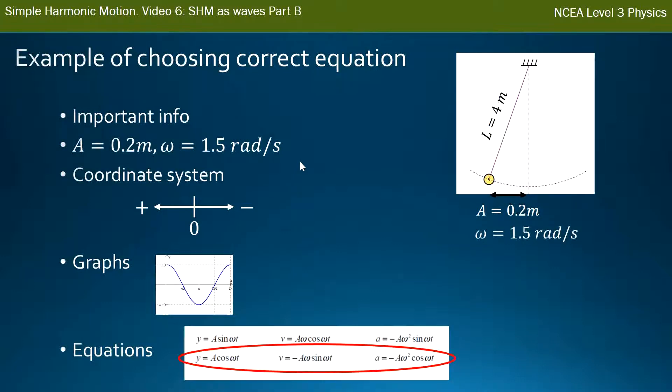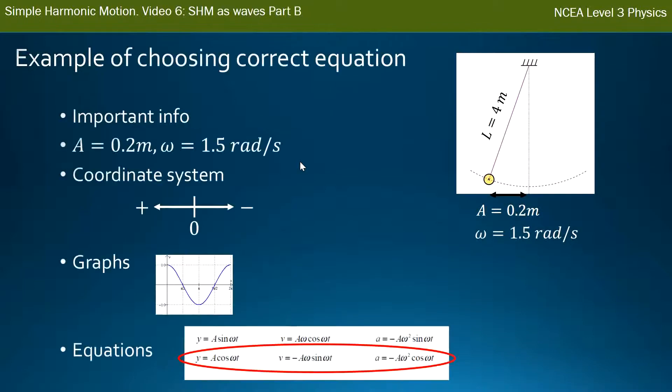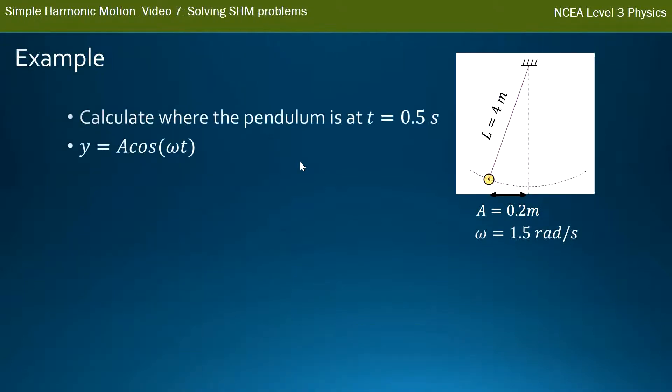I've set all my information up, so now I can just solve it. Where's the pendulum after t equals 0.5 seconds? I use that first displacement equation, y equals A cos omega t. Put my numbers in: A is the amplitude, 0.2. The length we don't use—that's not the amplitude. The length is useful for calculating the time period, but I've already given you the angular frequency here anyway.